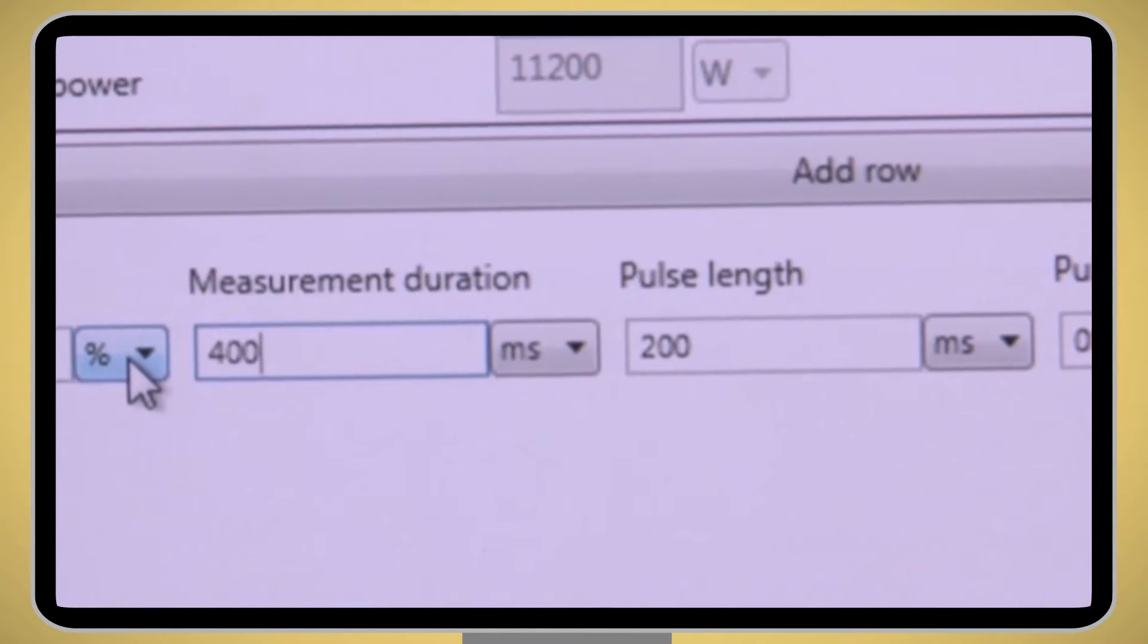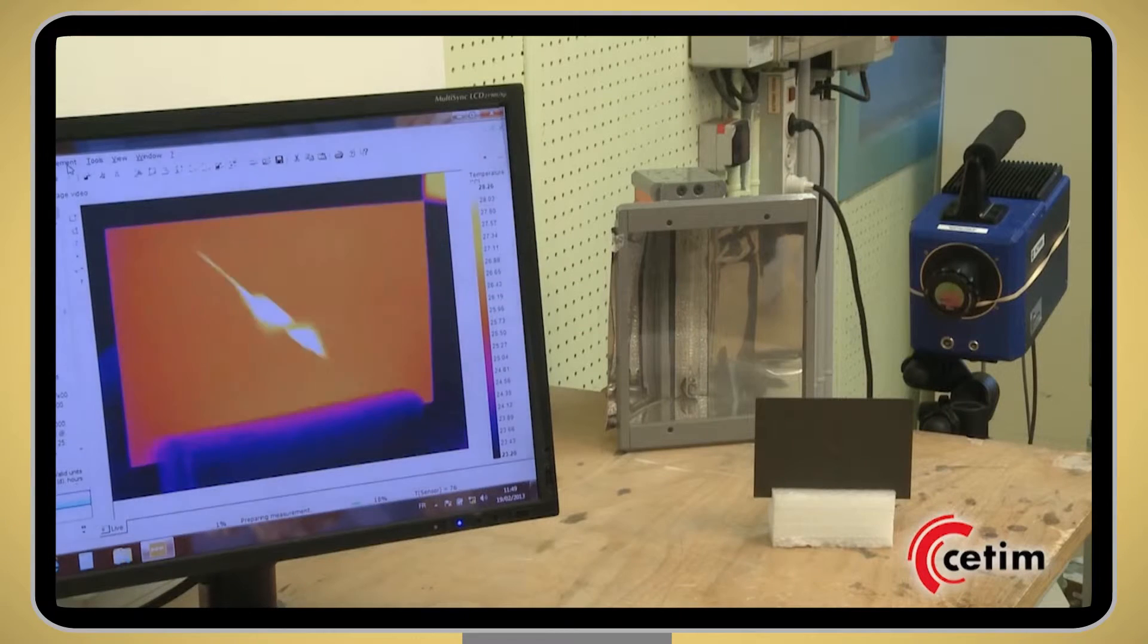The principle? Heat is applied for a short time, then its propagation within the material is monitored. Any defect, whether on the surface or within the material, is then revealed instantly.